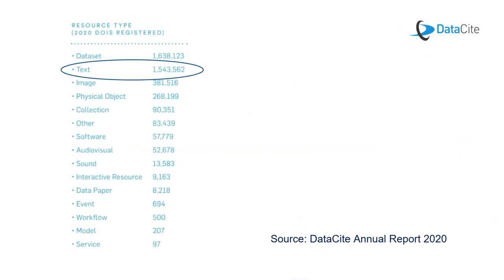Just a few numbers that show that more support for text publications is warranted. The number of registered DOIs for text publications with resource type 'text' is almost the same as for datasets. After datasets, most DOIs are registered for text publications, so it was about time we started to pay more attention to this.